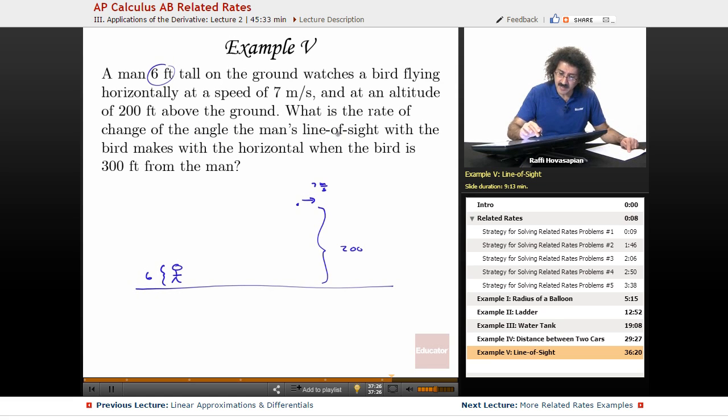What is the rate of change of the angle the man's line of sight with the bird makes with the horizontal? Well the man's line of sight with the bird is this thing right here. The horizontal is right here. The line of sight, the horizontal, this is the angle. We'll call that theta when the bird is 300 feet from the man.